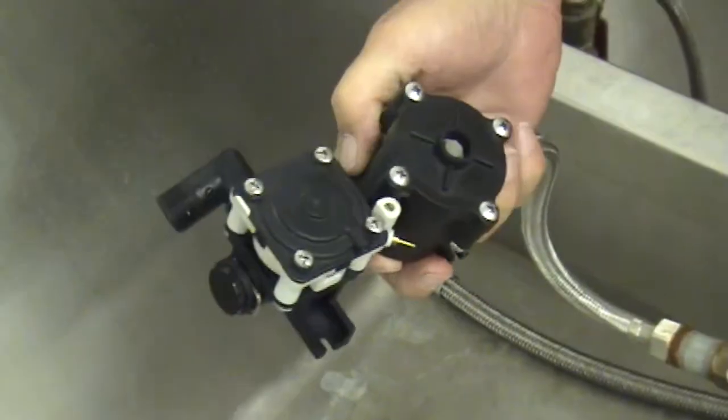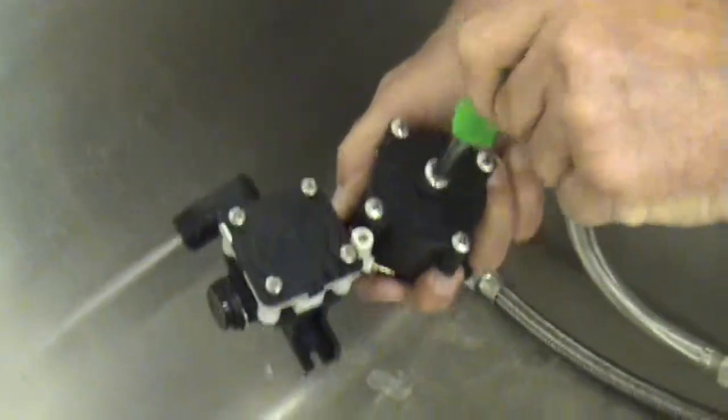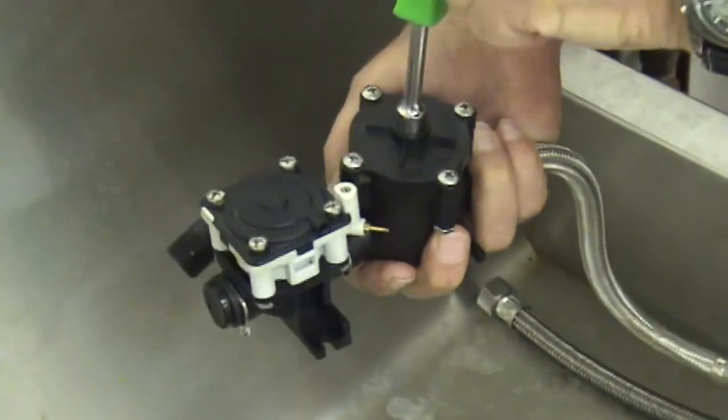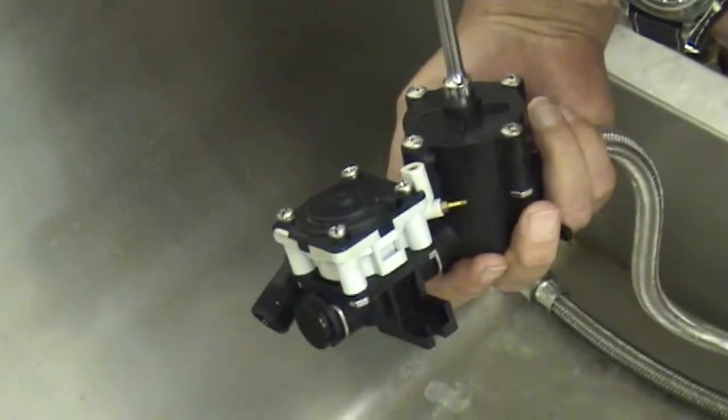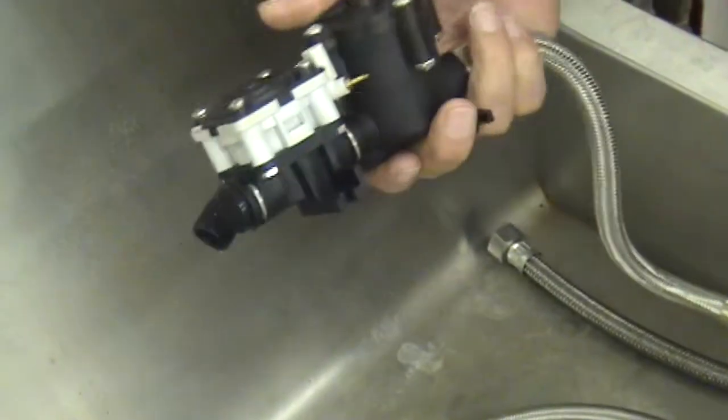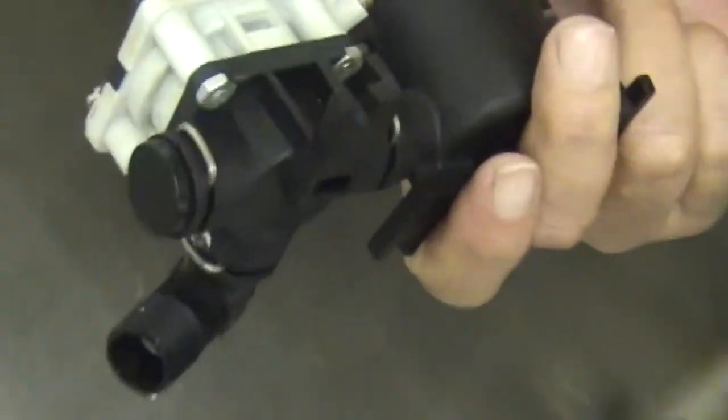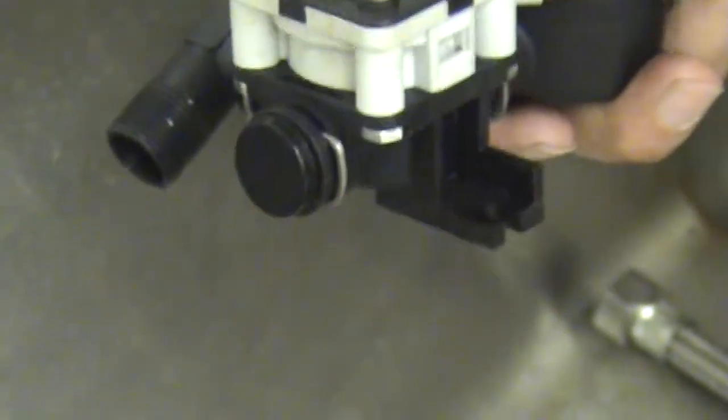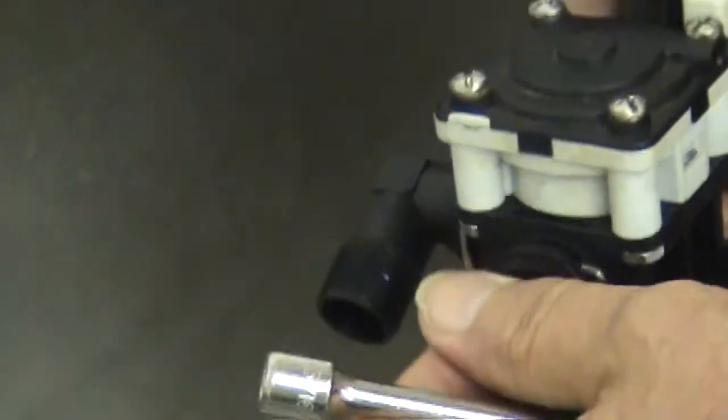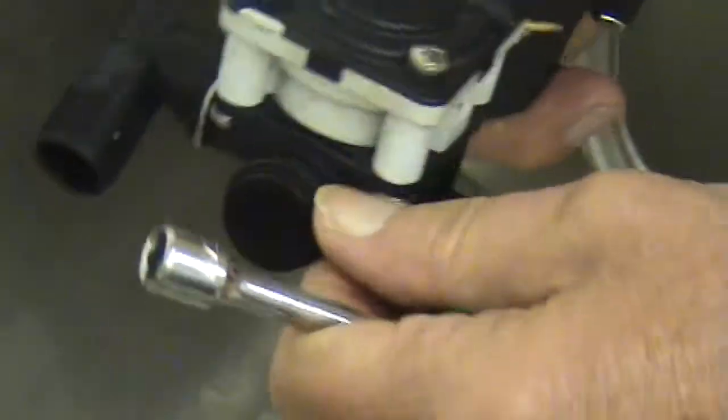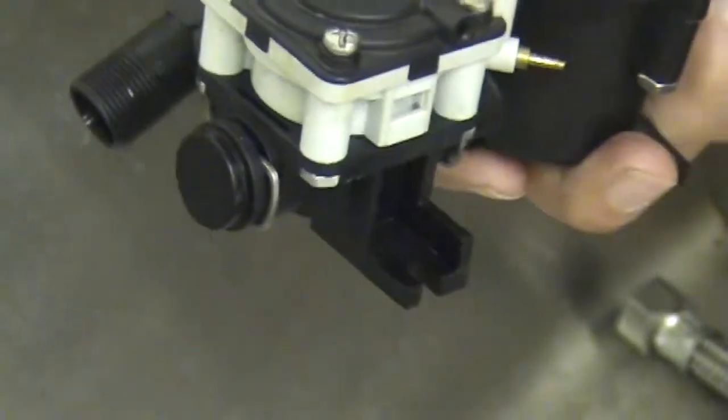Now we'll turn the water on again and see if we've corrected our problem. As you can see, looks like we have a drip on this end as well. Maybe not, it seems to have stopped, so the o-ring probably sealed itself.